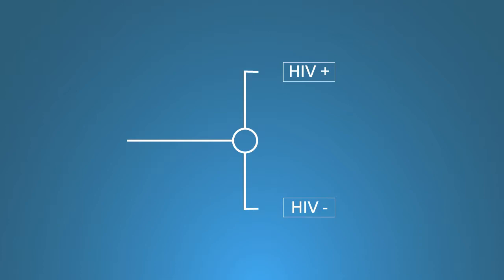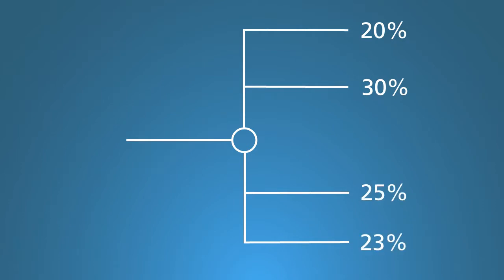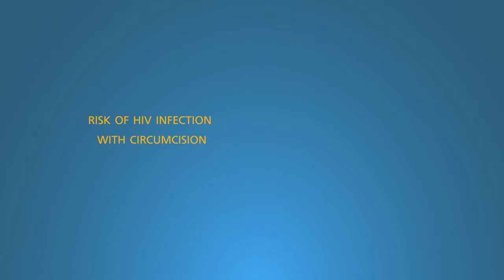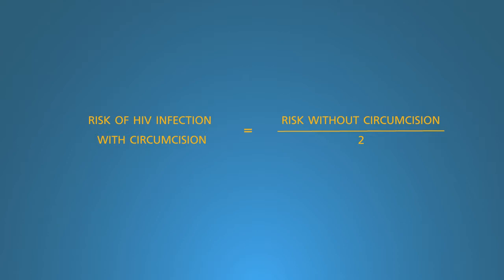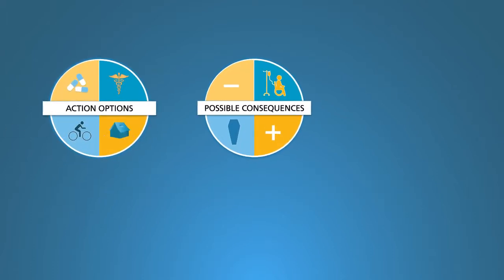For learning, we'll keep it simple. The upper chance node shows that with no circumcision camp, the likelihood of getting HIV infection is 0.4, or 40%, so the chance of not getting HIV infection is 60%. These probabilities always add up to 1. It's best for chance nodes to be dichotomous to facilitate sensitivity analyses, but it's also okay to show three or more mutually exclusive outcomes. With the circumcision camp, the chance of HIV infection is specified as 20%, based on three excellent clinical trials showing that circumcision lowers the risk of HIV infection by 50%. Half of 0.4 is 0.2, thus the likelihood of no HIV infection is 80%.